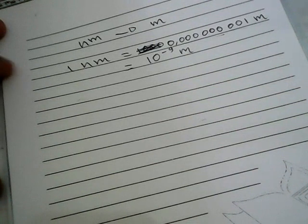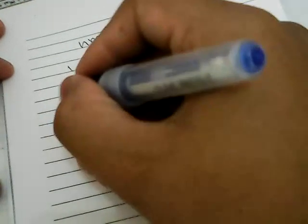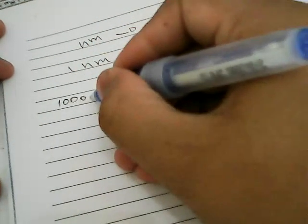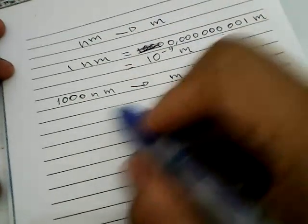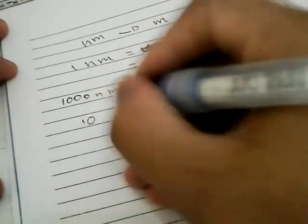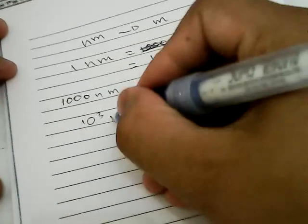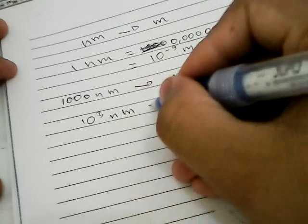Now I want to convert one thousand nanometers into meters. First, I need to simplify one thousand into ten to the power of three, because there are three zeros. So one thousand nanometers equals ten to the power of three nanometers.